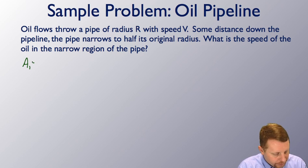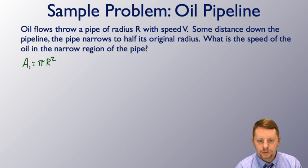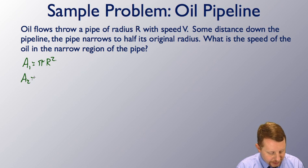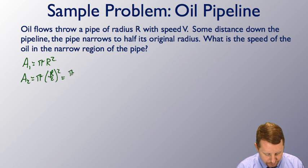Well, area 1 will be π capital R squared. Area 2 then will be π times capital R over 2 squared, or π over 4 R squared.